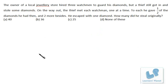The owner of a local jewelry store hired 3 watchmen to guard his diamonds, but a thief got in and stole some. On the way out, the thief met each watchman one at a time. To each, he gave half of the diamonds he had then and two more besides. He escaped with one diamond. How many did he steal originally? Instead of algebraic equations, let's work backward and eliminate options quickly.